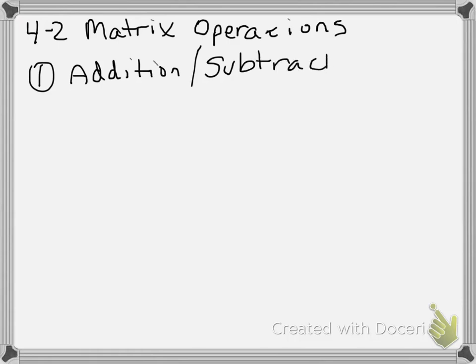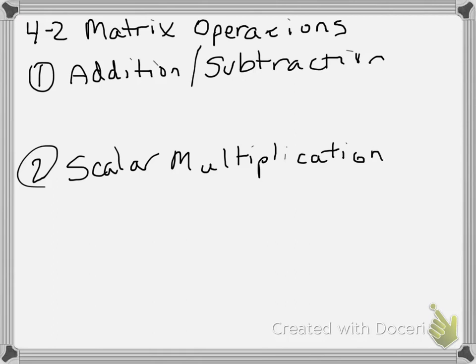One is going to be addition and subtraction, and then the other will be what's called scalar multiplication. I'm going to explain what that means when we get to it, but basically matrices you can multiply them two different ways. In this section we're going to focus on what is known as scalar multiplication. More on that in a bit. First let's talk about addition and subtraction.